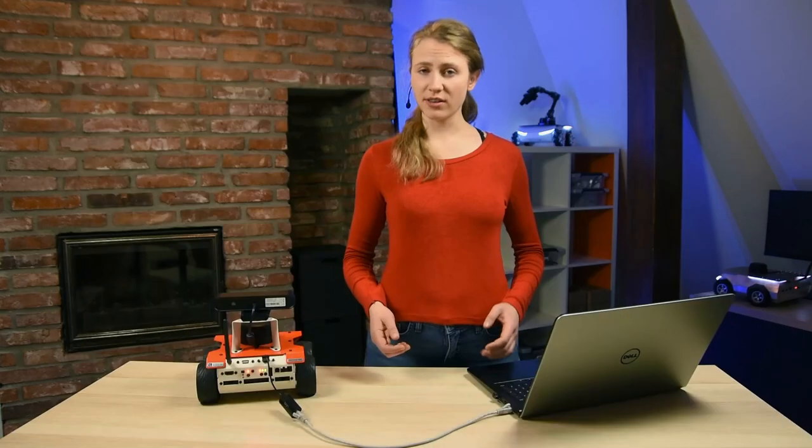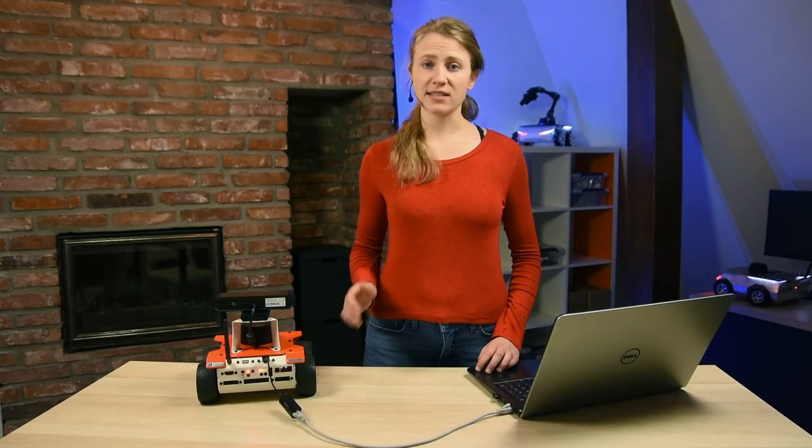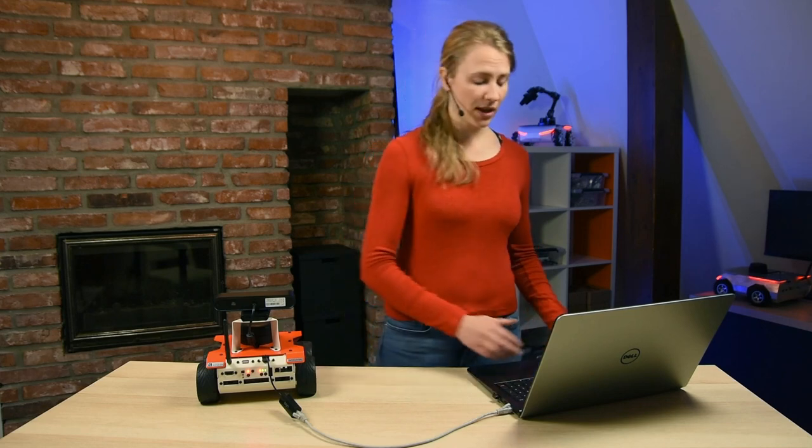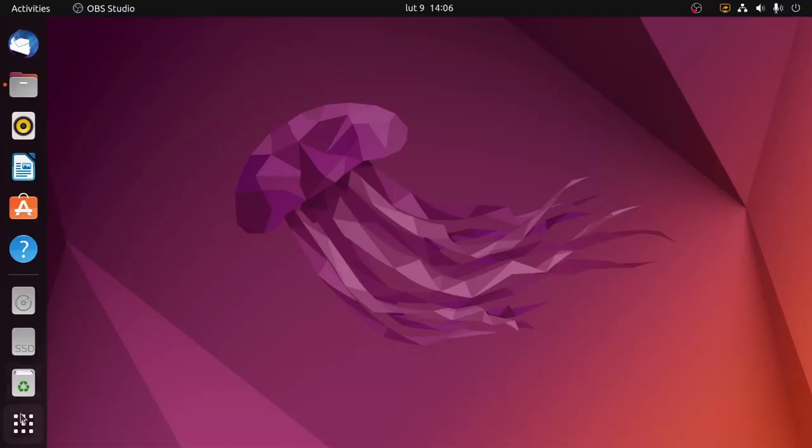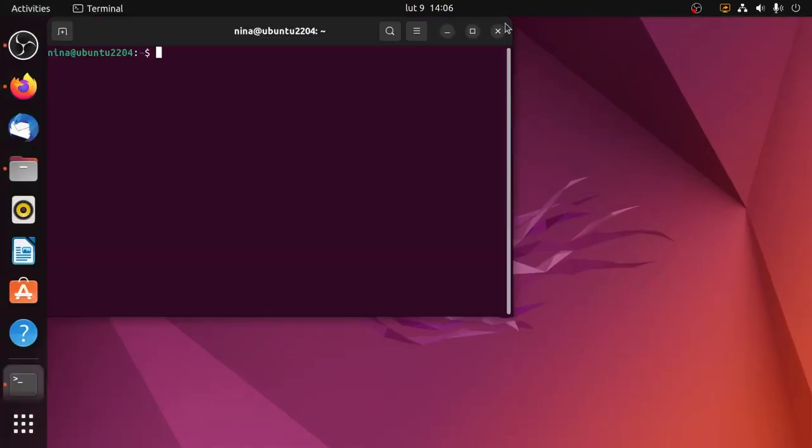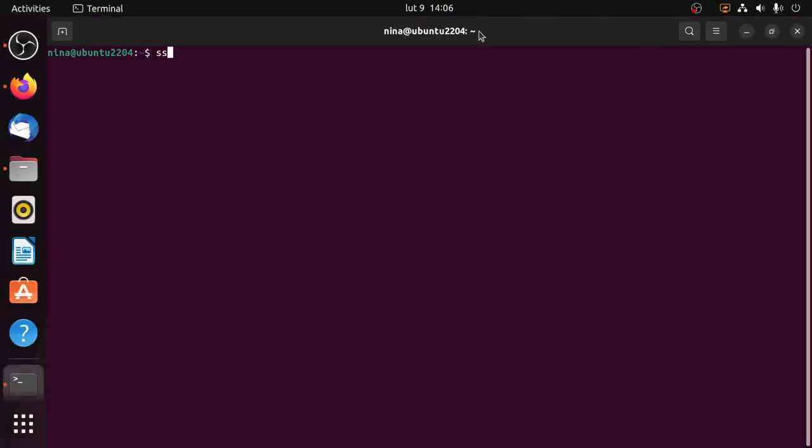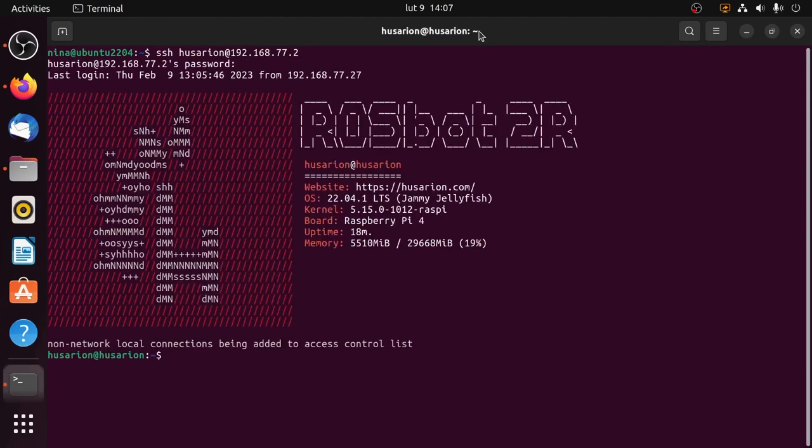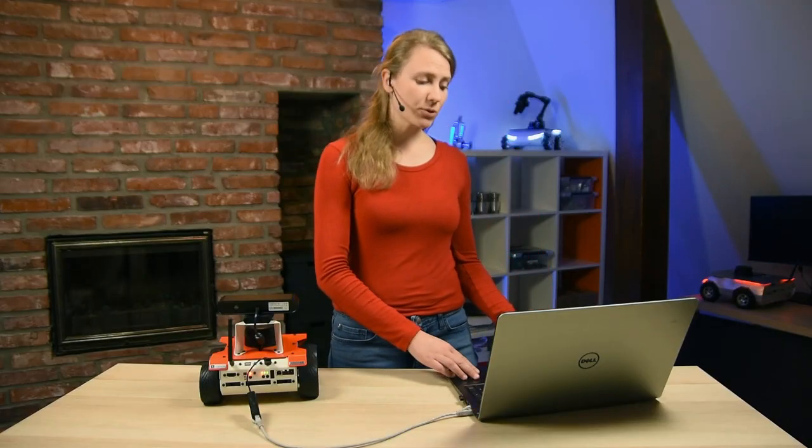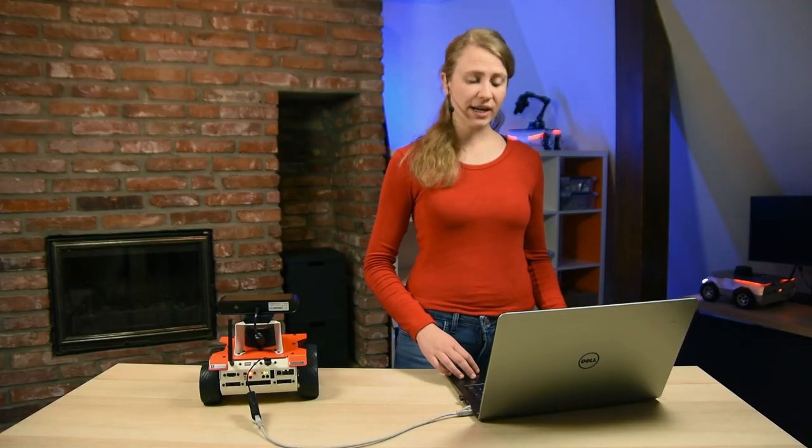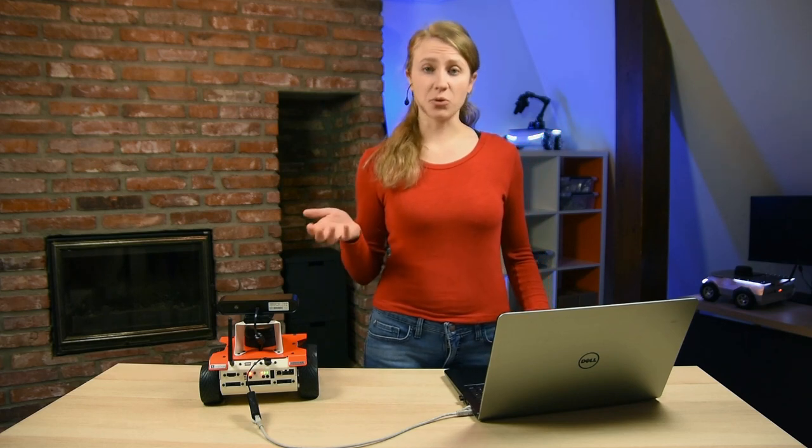Now we can move on and connect to our robot via SecureShell protocol. Let's open the terminal and simply type SSH HUSARIAN ADD and here we put this IP address. The default password is HUSARIAN. As you can see we're in Rosbot's Linux terminal right now and we're ready to connect to Wi-Fi.